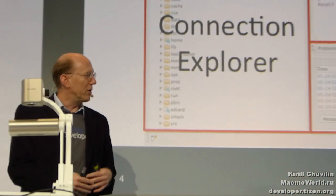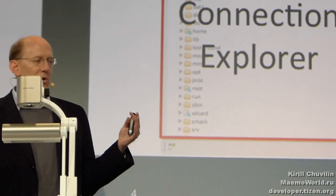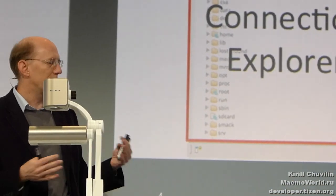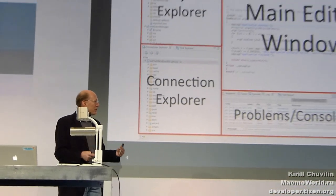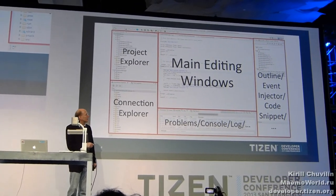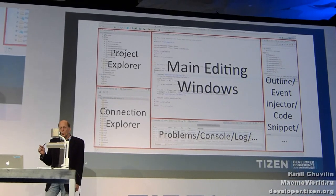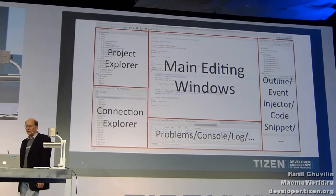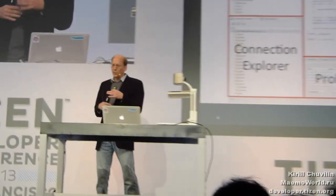A couple of other extras we have are the Event Detectors — a really nice tool that you don't have on some other platforms, where you can actually simulate all sorts of events, from typical stuff all the way through NFC and other things. There's also a code snippet feature that helps facilitate standard things like exception handling and logging, making life easy.